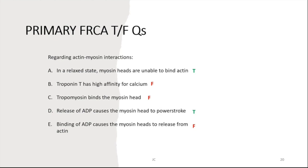Regarding the actin-myosin interaction: A) In the relaxed state, myosin heads are unable to bind actin — True. B) Troponin T has high affinity for calcium — False, that is troponin C. C) Tropomyosin binds the myosin head — False, tropomyosin is bound to actin and moves out of the way to allow the myosin head to interact with the myosin binding site. D) Release of ADP causes the myosin head power stroke — True. E) Binding of ADP causes myosin heads to release from actin — False, it is ATP that causes this.